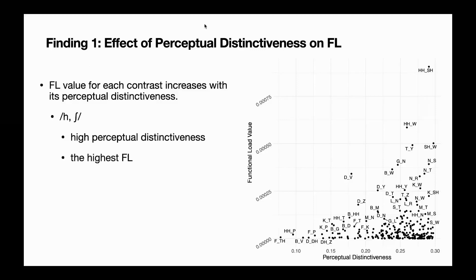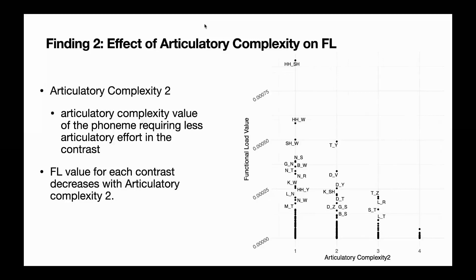The second major finding is that functional load value for each contrast decreases with articulatory complexity of the phoneme requiring less articulatory effort in the contrast. For example, the three phoneme pairs with high functional load contain the phonemes U and H, which are much easier to articulate.